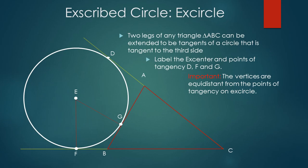Moving on to the excircled circle, or the excircle. It is similar to the construction of the incircle, but on the exterior of the triangles. We begin by constructing triangle ABC and extending its legs so that all three sides are tangent to a circle. Next we label the points of tangency D, G, F, and the center of the excircle, or ex-center, as E. As for the incircle, the important part here is to understand that the vertices are equidistant from the points of tangency on the excircle. That is, FB is equal to BG.